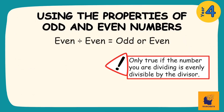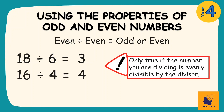The next thing we need to understand is that an even number divided by an even number gives us an odd or even number as an answer. However, this is only true if the number we are dividing is evenly divisible by the divisor. So for problems like 18 divided by 6 or 16 divided by 4, the condition works because the even dividend is evenly divisible by the even divisor. However, for problems like 36 divided by 8, the condition doesn't work because the even dividend is being divided by an even divisor that it isn't evenly divisible by.